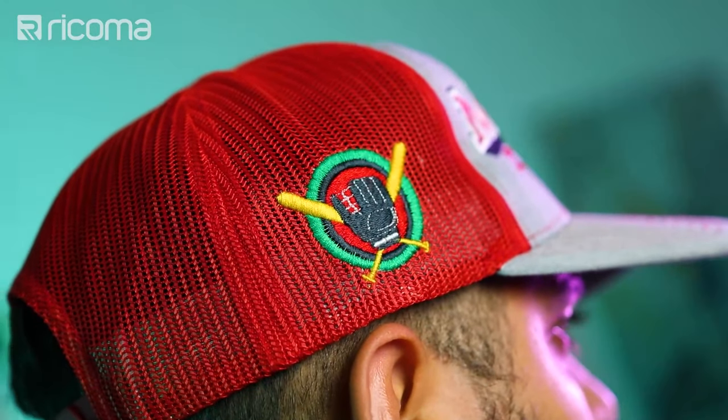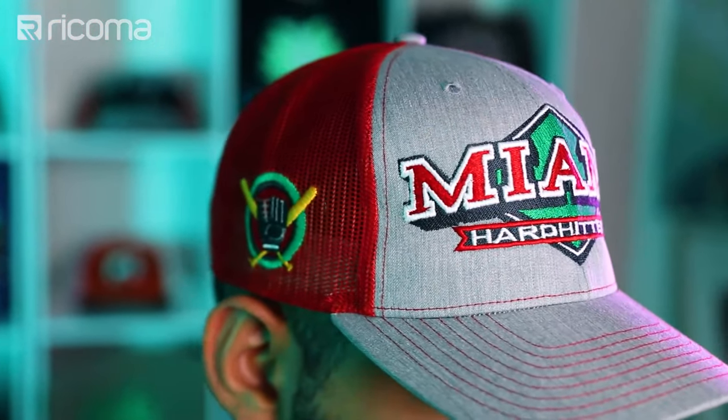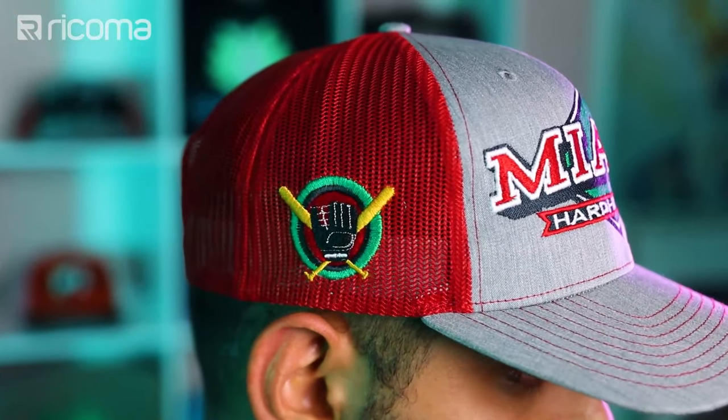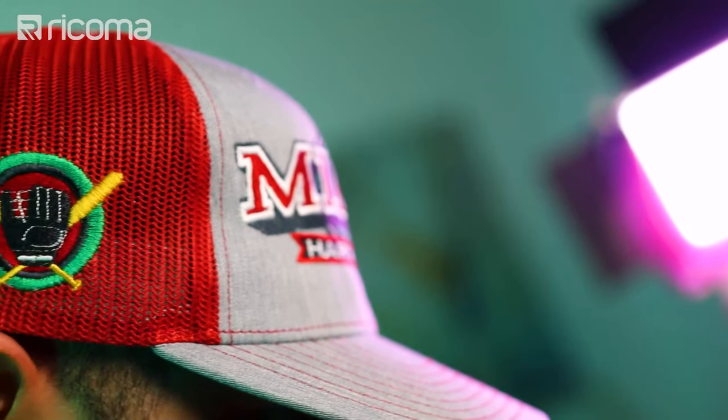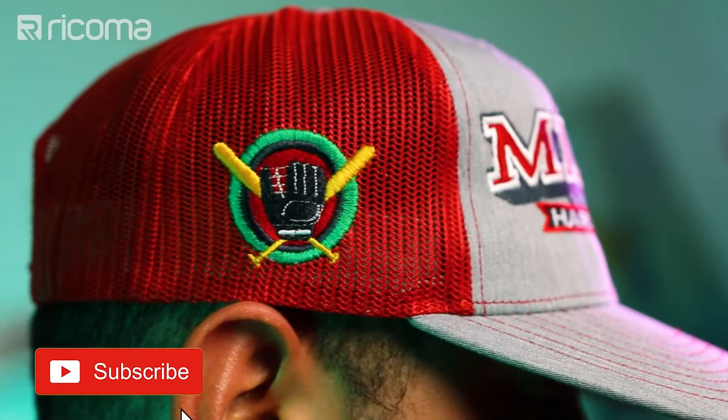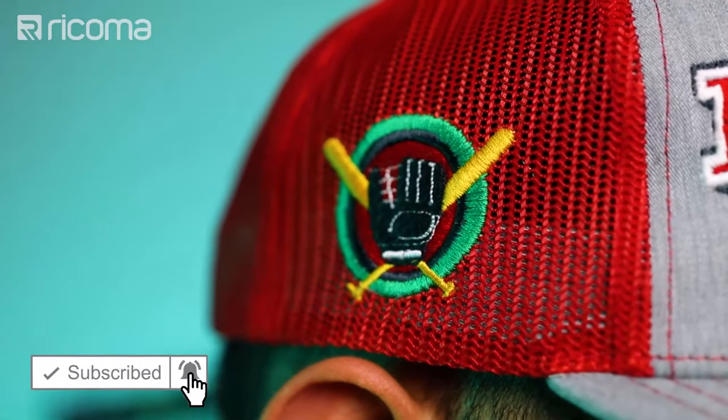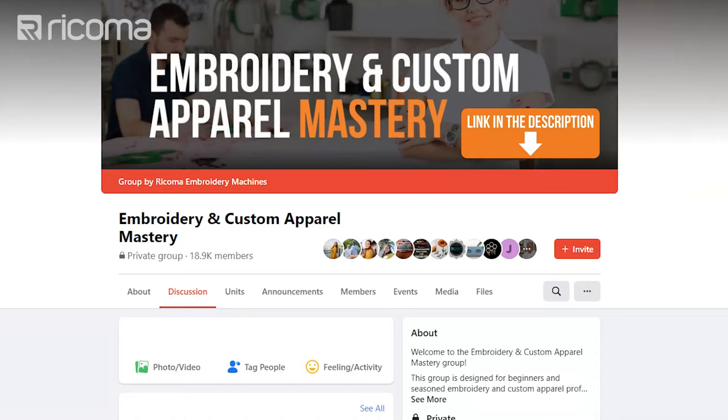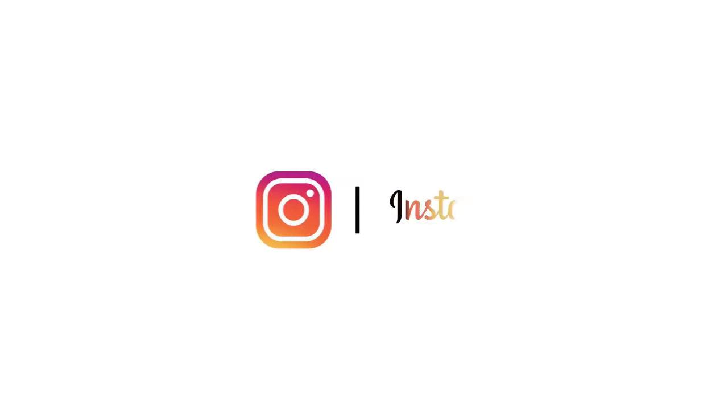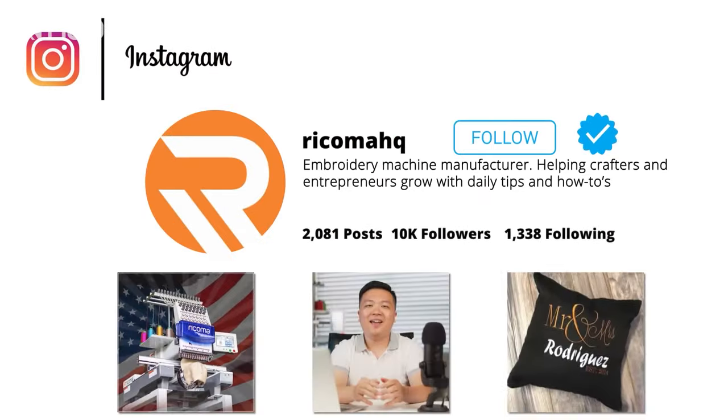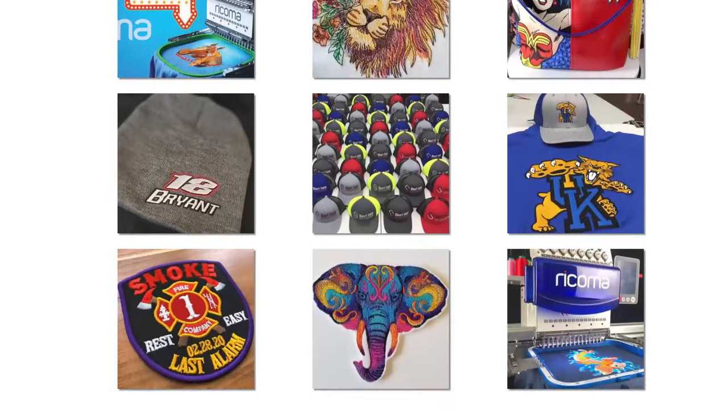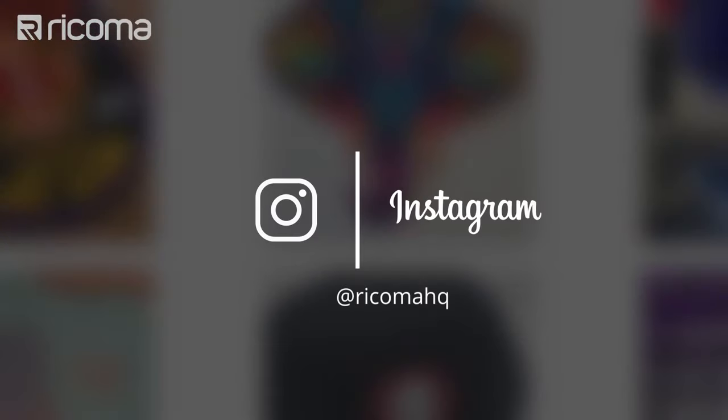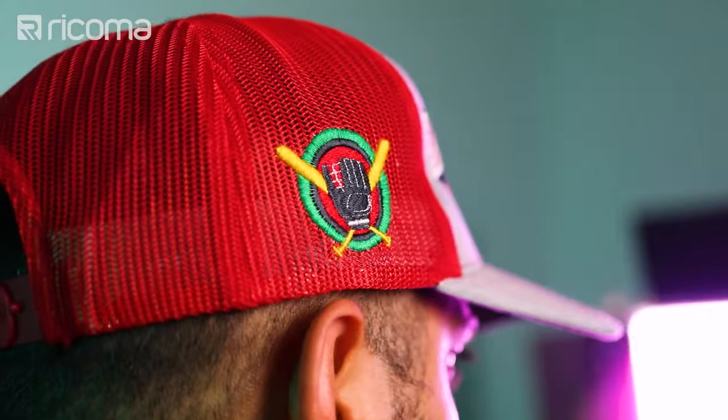Embroidering on the mesh side of trucker caps is an easy and unique embroidery application method that will help you keep a competitive edge in your business. Alright guys, that's it for this episode. Be sure to give this episode a thumbs up if you liked it and subscribe to our channel if you haven't done it already. Before I go, I just want to remind you that you can connect with other apparel decorators like myself by joining the free Facebook group, Embroidering Custom Apparel Mastery. If you want to get the latest info on the world of decorated apparel, make sure to follow us on Instagram at RecomahQ. Okay guys, that's it for this one. Have a nice one. Bye.